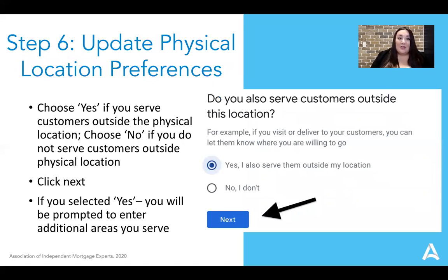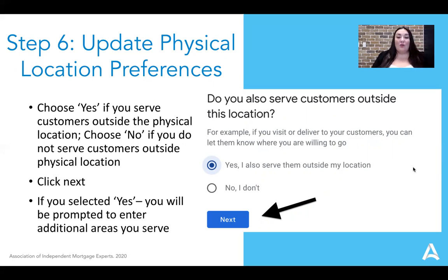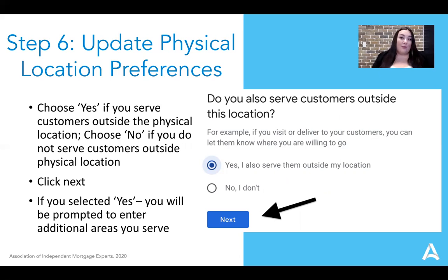Now you're going to update your physical location preference. This is basically where you can tell Google whether you're only serving customers in one location or whether you service customers in multiple locations. If you are only licensed in one area, you might want to click 'No, I don't serve customers outside of this location.' If you are licensed in, say, 10 different states, you're going to want to click Yes, and then Google will ask for more information about where each of those locations are.